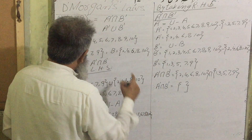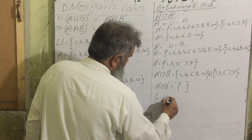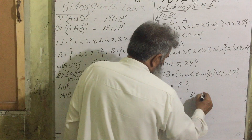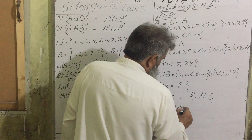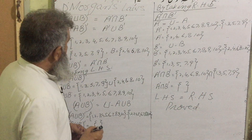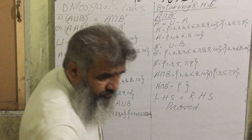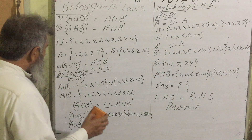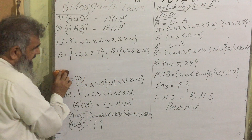Therefore left hand side equals right hand side — proof complete. The first De Morgan's law is proved. Now let us do the second one. The given sets remain the same.